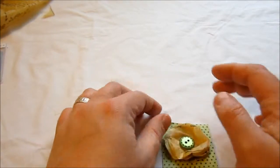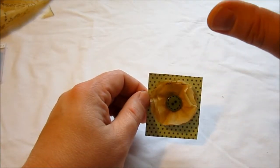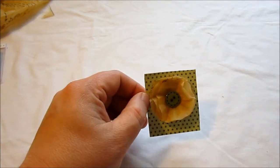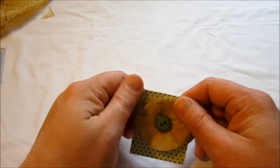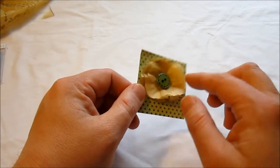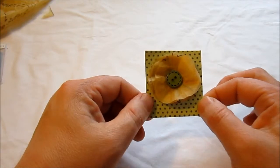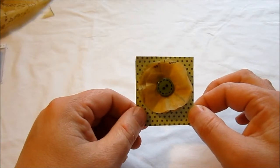Now if you're using this in a scrapbook that you're going to put into one of those plastic sheet protectors, it's going to end up flat anyway, but you'll still get the idea of the depth. And that's how quick and easy it is to make a flower.